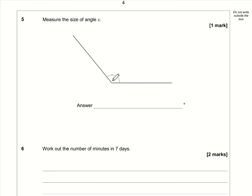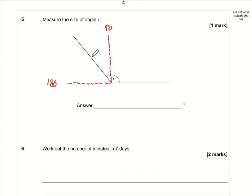Question five is difficult to demonstrate — you need to measure the angle using a protractor. Estimating it, I can see it is greater than 90 degrees — it's an obtuse angle — so it's between 90 and 180 degrees. It's closer to 90 than 180, so probably about 120, but measuring it should give about 130. Anything between 128 and 132 degrees is acceptable.